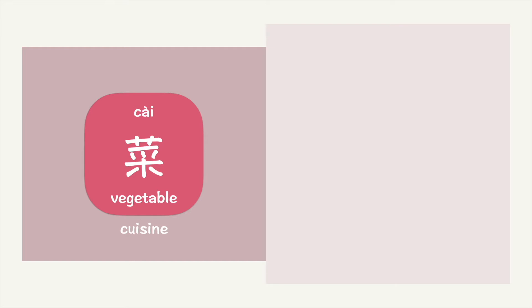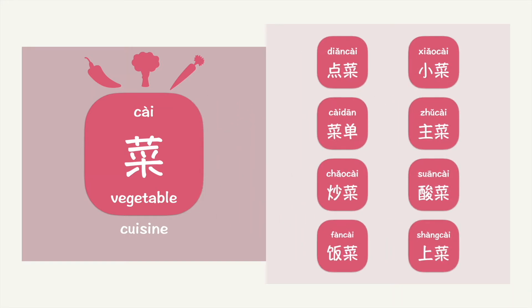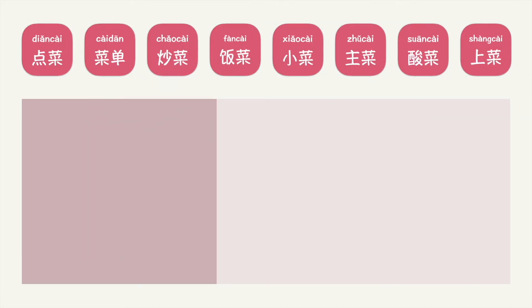Hi everyone, today we're going to use the word 菜, which means vegetable or cuisine, and expand it to eight new words: 点菜, 菜单, 炒菜, 饭菜, 小菜, 主菜, 酸菜, 上菜. Now let's look at them individually.